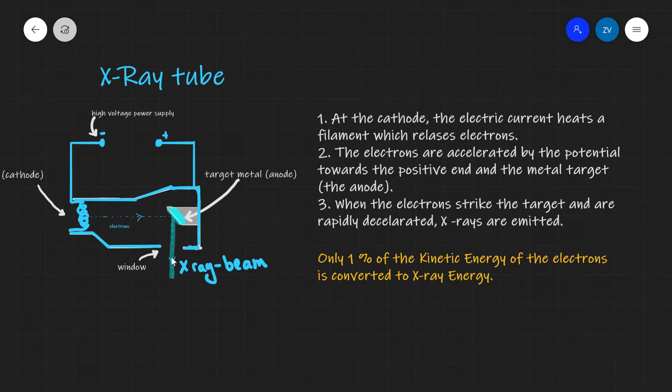This is a process which is also known as Bremsstrahlung, which comes from German and it means breaking radiation. One final and really important part of this is that only 1% of the kinetic energy of the electrons is converted to x-ray energy. So this is not a very efficient process and it comes up very often in questions.